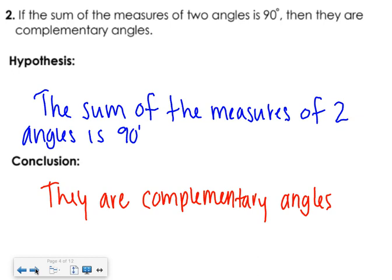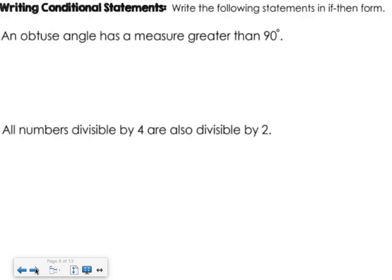And then our next part is we are asked to take a sentence and put it in if-then form. So an obtuse angle has a measure greater than 90 degrees. How could we write that in if-then form? If an angle has a measure greater than 90, then it is an obtuse angle. You can write it that way. That works. Or you can say if an angle is obtuse, then it has a measure greater than 90. You can go either way.